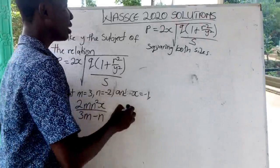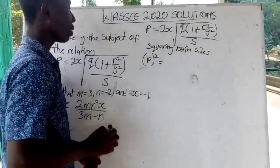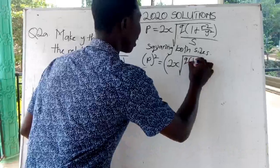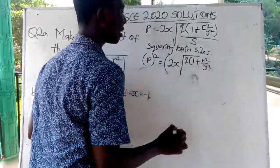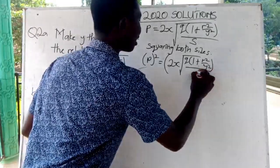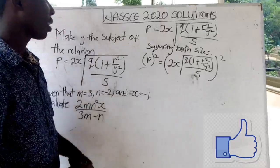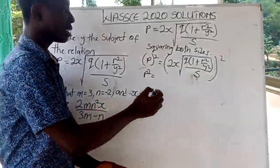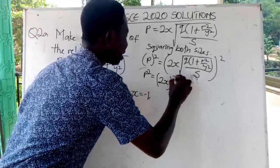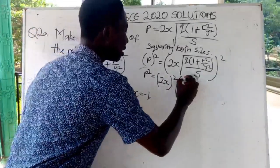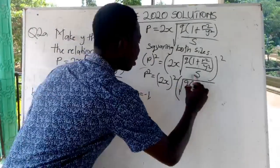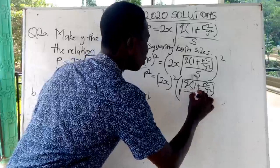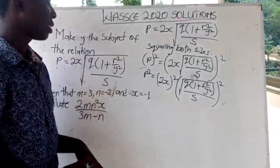After squaring both sides, I'm going to get P squared is equal to 2x multiplied by Q into one plus r squared over y squared, all over s, all squared. Now we are going to expand — this square will multiply the first 2x and also multiply the one in the square root: Q into one plus r squared over y squared, all over s, all squared.